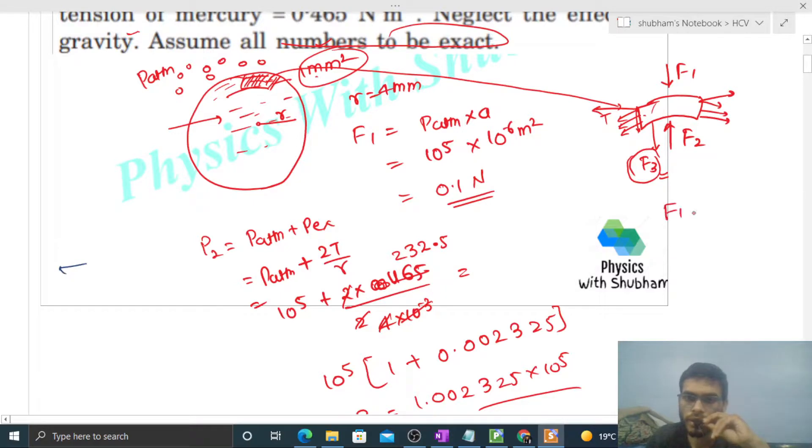So F1 plus F3, that is equal to F2. F1 that is 0.1 plus F3 value we find out, that is F2 0.1002325. You can check, so F3 will be simply 0.00023.